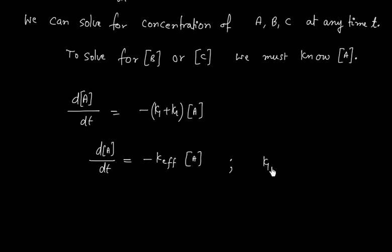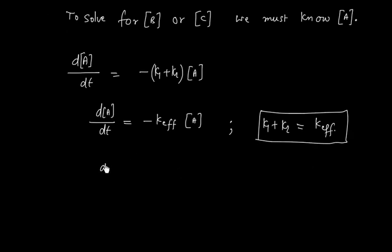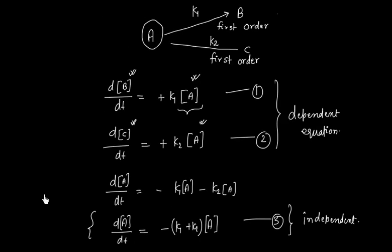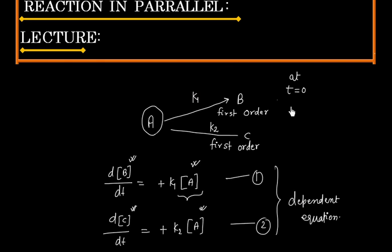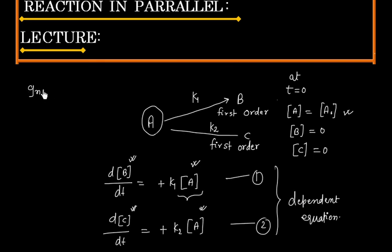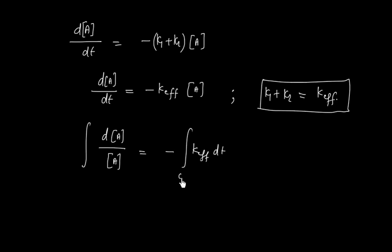We define a new constant: K_effective equals K1 plus K2. We can integrate both sides. Initially, at T equals zero, the concentration of A is A₀, concentration of B is zero, and concentration of C is zero. This means initially only A is present. When time is zero, A is A₀; when time is T, A is A_T.